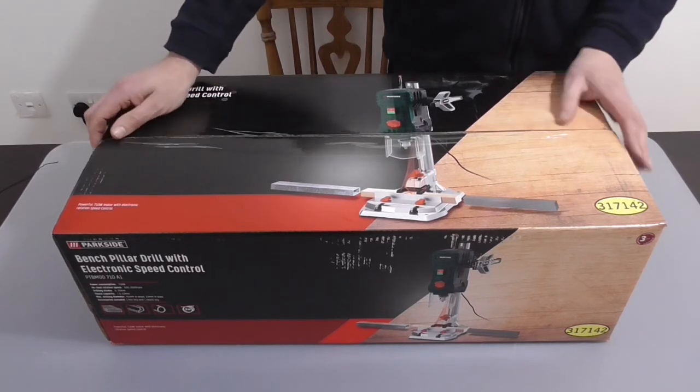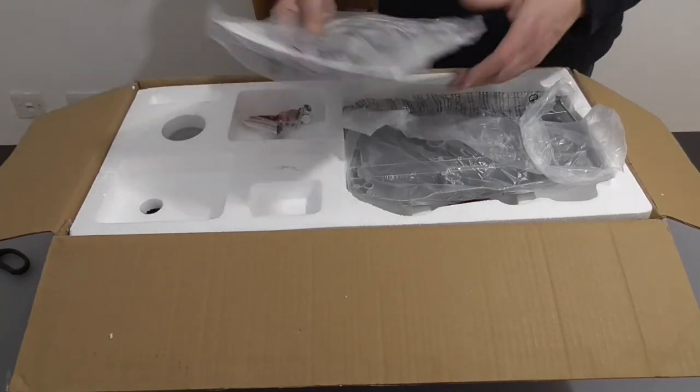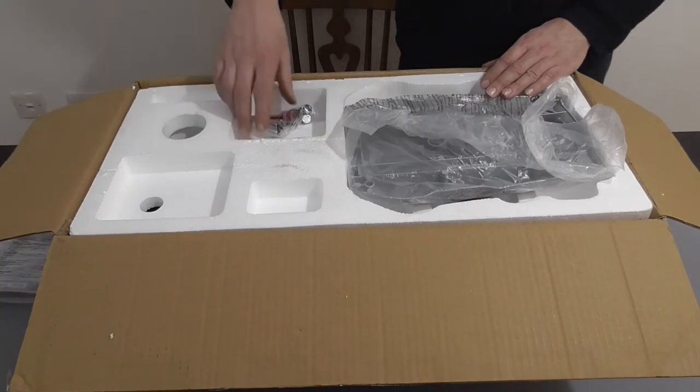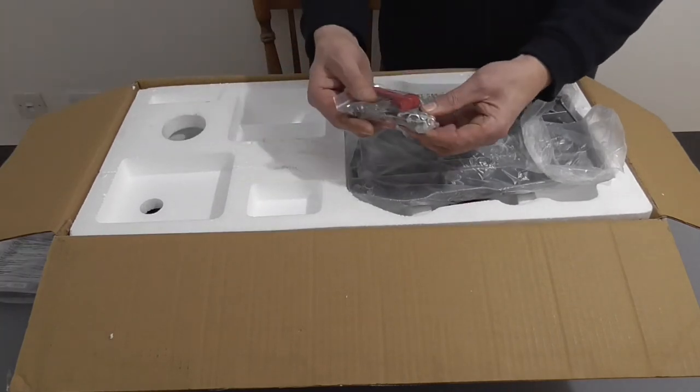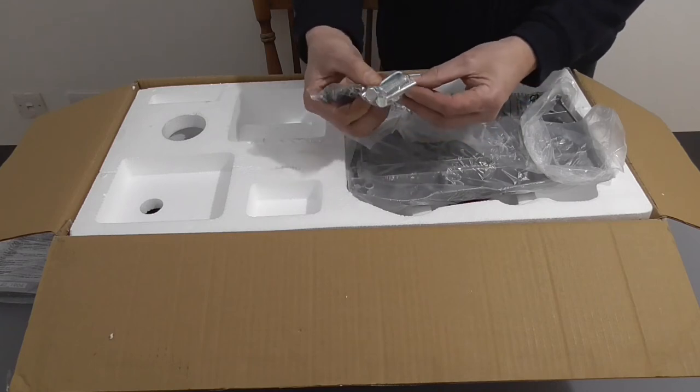So we'll just get it out of the box and see what it looks like. In the box we have the instruction booklet, a bag of bolts, a chuck key, and a hex key.